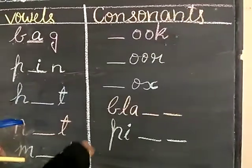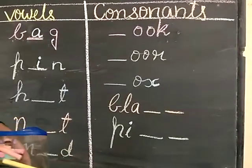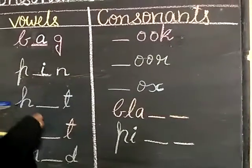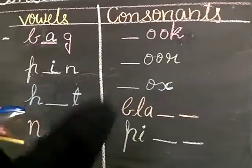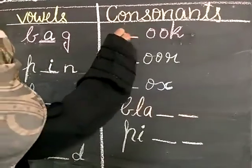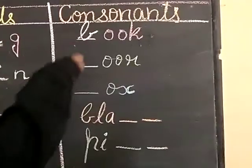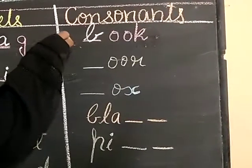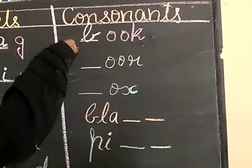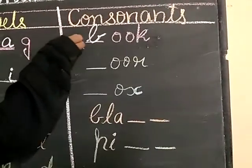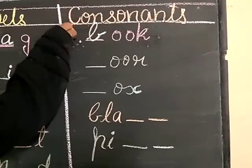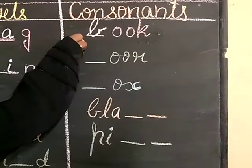Now, let's write few more examples of consonant. Dash O-O-K. This is one book. B-O-O-K, book. Now, here also, it can be hook, it can be took. But, remember, when it's asking consonants to write, you have to write consonants only.